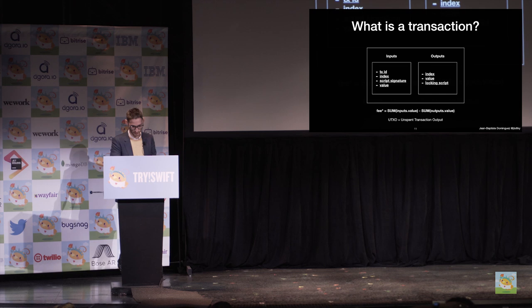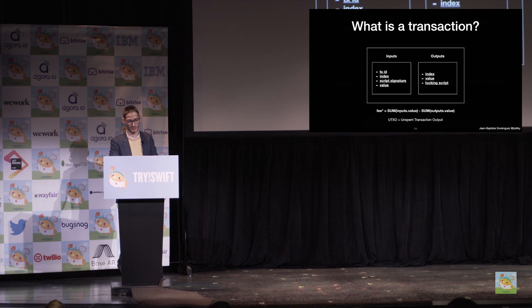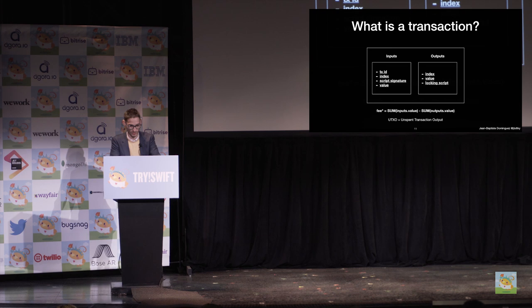We also have the value, which is very important for the developer because the fee is calculated like this: it will be the sum of the inputs minus the sum of the outputs. If you don't calculate the difference correctly, you could lose funds. We call a specific output 'change' — that you will create to get back the change. In the output, you will have the index in the output list, the value — the amount you want to send — and the locking script, which is really important because it defines the spendable condition of your output and defines your smart contract.